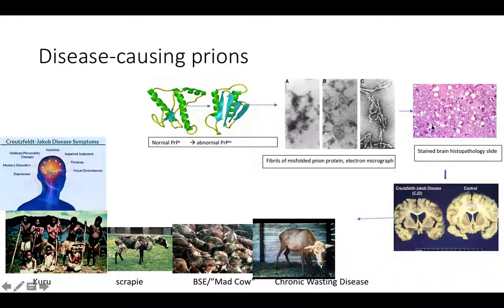As we can see in this thin section through the brain of a person that's died of a prion disease — this has been stained and we're looking at it under the light microscope — we can see all these holes that are the result of the disease-causing prions causing the neurons to die. As a family of diseases, prions cause transmissible spongiform encephalopathy. They are 100% fatal, and sadly we don't have any treatment for them.